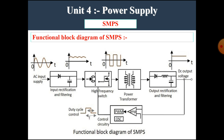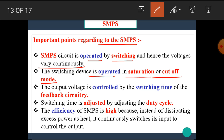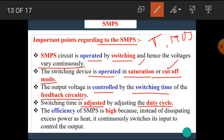I hope you all understand the working of switching mode power supply. Some important points regarding SMPS: the SMPS circuit is operated by switching, hence the voltages vary continuously. The switching device is operated in saturation or cutoff mode. The output voltage is controlled by the switching time of the feedback circuitry, and the switching time is adjusted by adjusting the duty cycle. The efficiency of SMPS is high because instead of dissipating excess power as heat, it continuously switches its input to control the output.